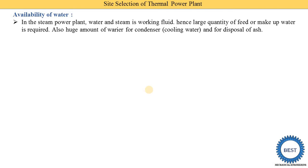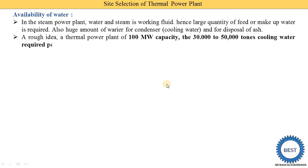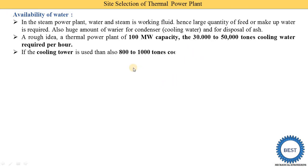A huge amount of water is required for condensers and for disposal of ash. A thermal power plant of 100 megawatt capacity requires 30,000 to 50,000 tons of cooling water per hour. If a cooling tower is used — meaning a closed system for cooling water — then 800 to 1000 tons of cooling water are required per hour. So if we use a cooling tower, the requirement is reduced to 800 to 1000 tons. The makeup water required to compensate for loss of feed water is also 10 to 15 tons per hour.